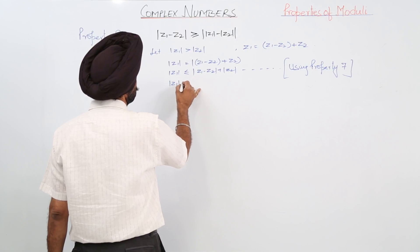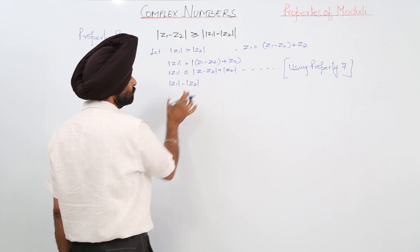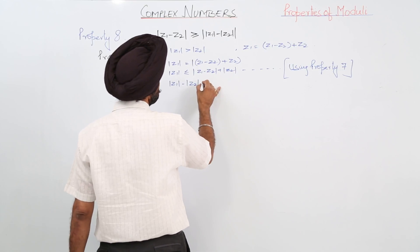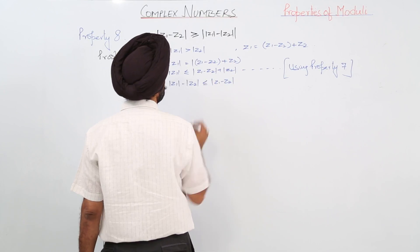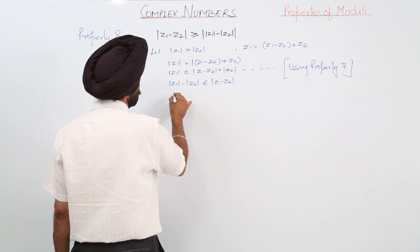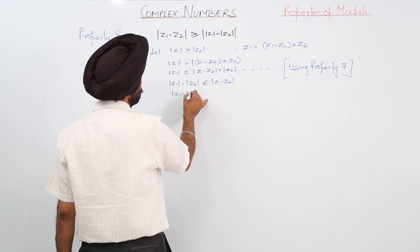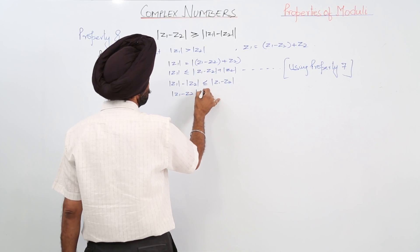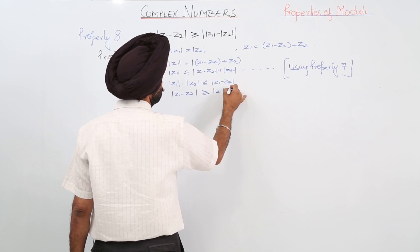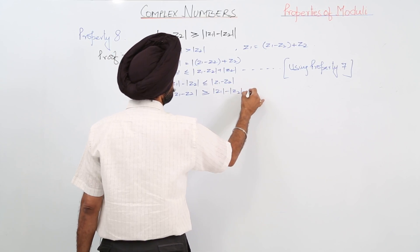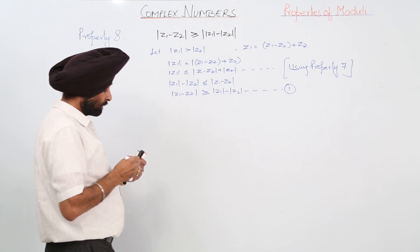Using property 7, z1's modulus is less than or equal to the modulus of (z1 - z2) plus the modulus of z2. Rearranging, the modulus of (z1 - z2) is greater than or equal to the modulus of z1 minus the modulus of z2. Let this be equation 1.